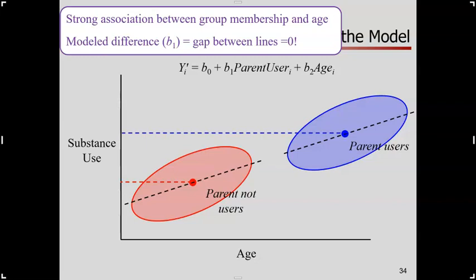I say the adolescents whose parents aren't substance users tend to use substances much less, and you come back and say that's because they're all younger — it's not what their parents are like, it's how old they are that matters. And if the data were like this, that's the conclusion we would reach.